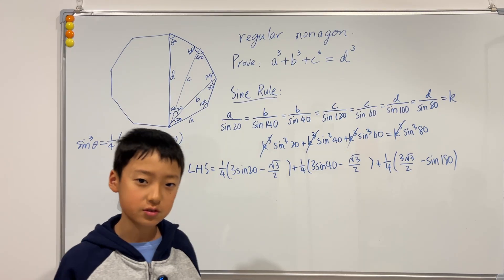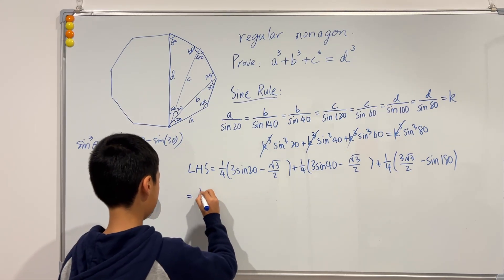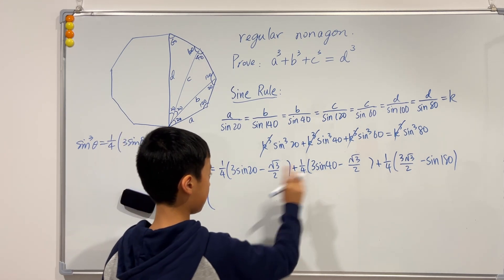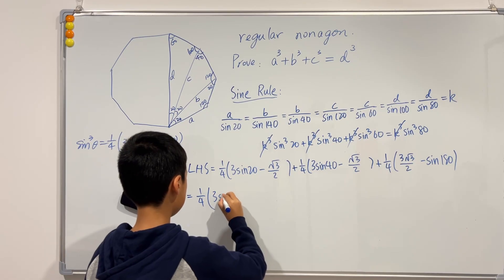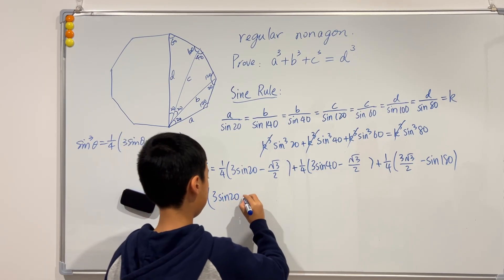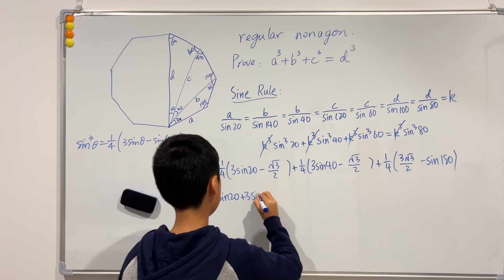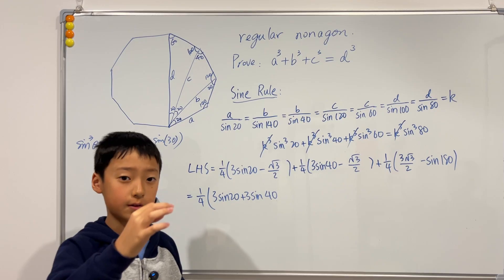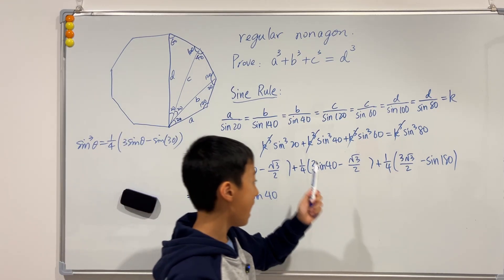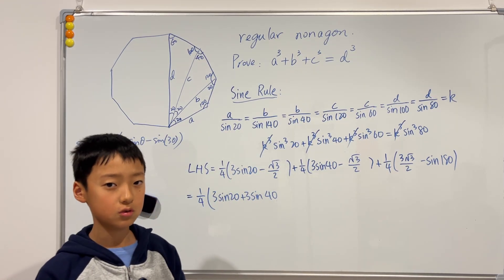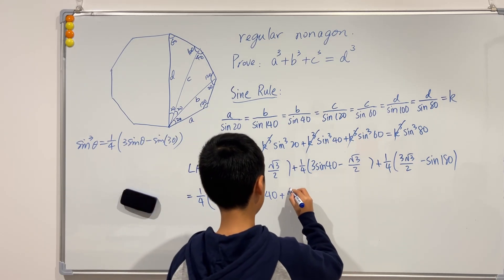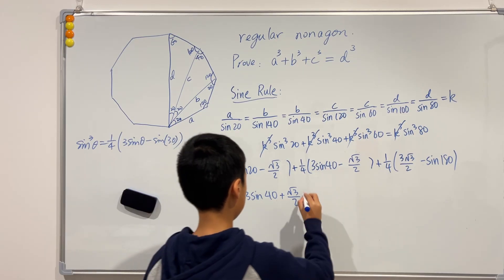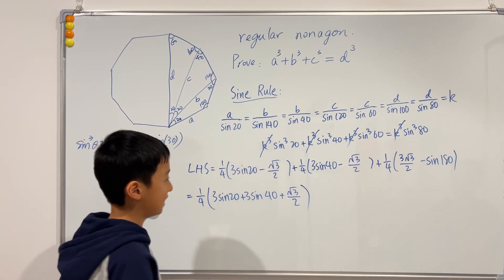Okay so the first thing we can do is we can factor out a 1/4, and the inside will be, first do this and that, 3 sine of 20 plus 3 sine of 40, then this minus that is negative 2 square root of 3 over 2, then we add 3 square root of 3 over 2 which will be plus square root of 3 over 2. And we know sine of 180 is just 0, so this is all. So this is the left-hand side.